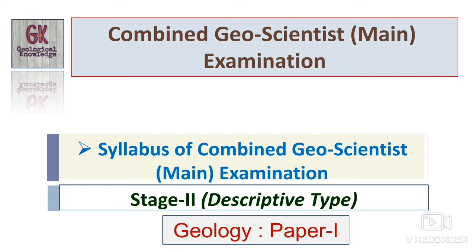On the basis of the previous year question papers you can analyze what types of questions are being asked and the pattern. The first question will be compulsory type — generally ten questions will be there and you have to answer in about 40–50 words. Question number one, or Part A, will be compulsory, and then there will be five units consisting of 30 marks each. In one section there will be two questions.